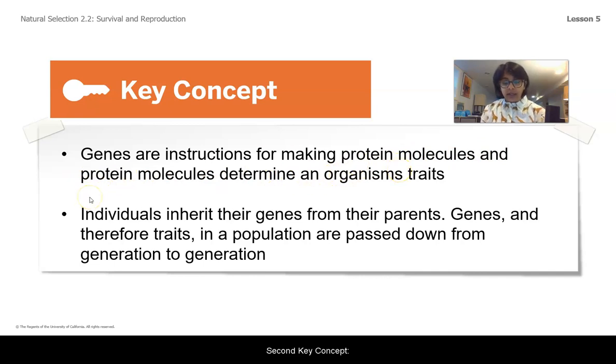Second key concept: Individuals inherit their genes from their parents. Genes and therefore traits in a population are passed down from generation to generation. We're gonna see that a little bit more with our next activity, but make sure you have these written down either in your tracker or your notebook so we can expand upon them a little bit later.